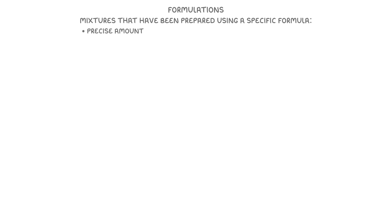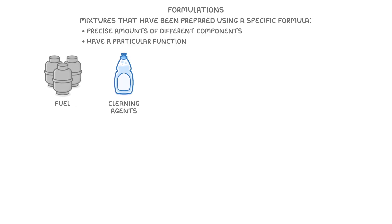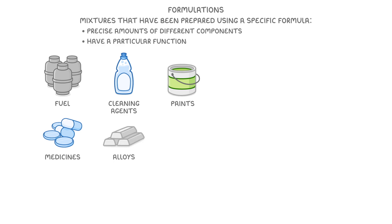The next term we need to look at is formulations, which are mixtures that have been prepared using a specific formula, so that they contain precise amounts of different components, and so can have a particular function. It's effectively like a recipe, but instead of a meal you're making a particular mixture, which could be used for a specific purpose, like fuels, cleaning agents, paints, medicines, alloys, fertilisers, and even food and drink.